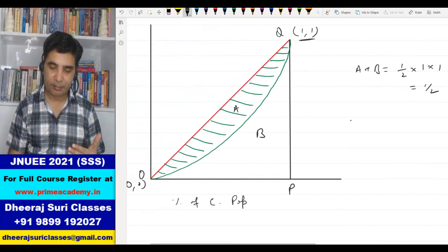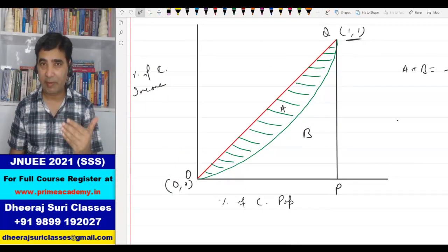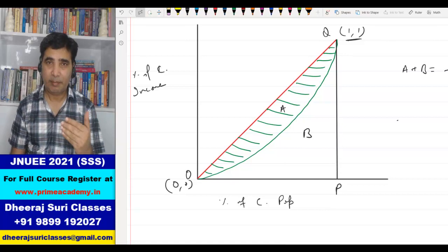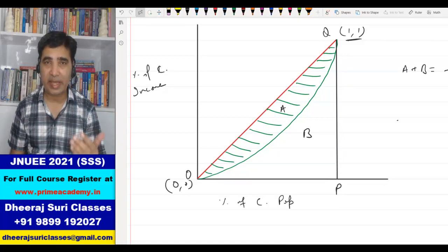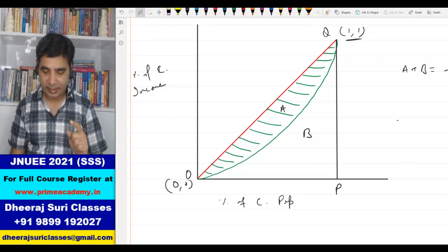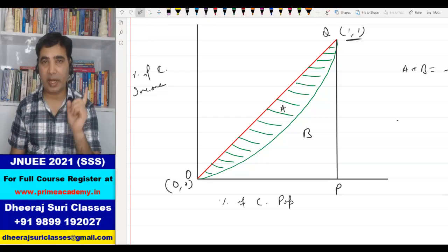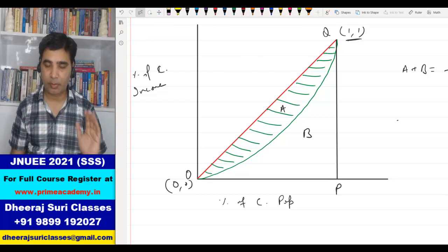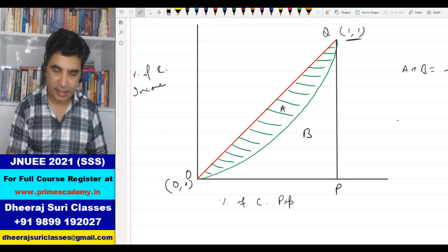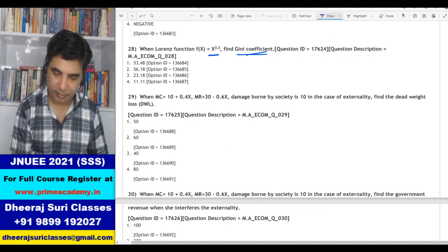So same notion. Now because this red line is 45 degree line of equality, it is mathematically represented as Y equals X. And this green curve is a Lorenz function, that function is given to us. Let me check that, it is X power 3.3.